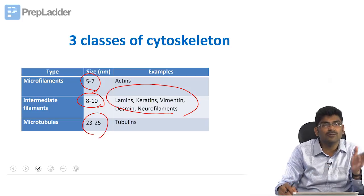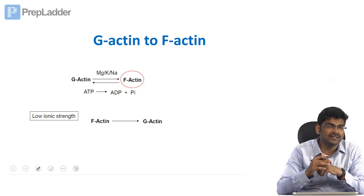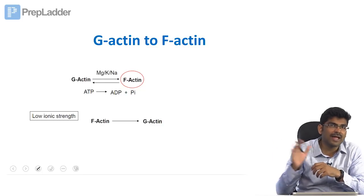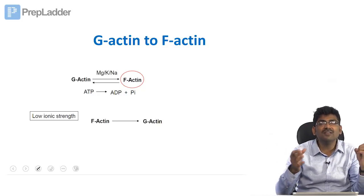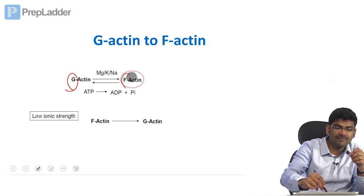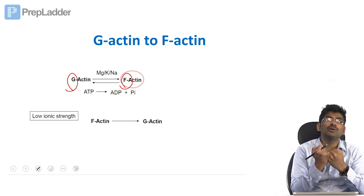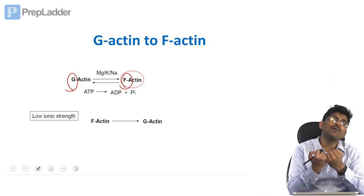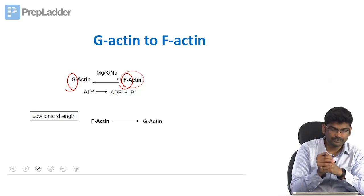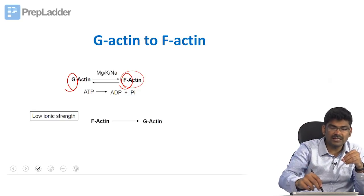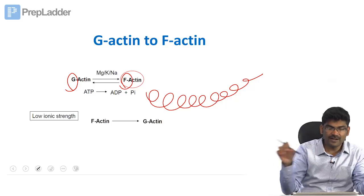Let us begin with microfilaments, that is actin. There are two types of actin: alpha and beta, and also gamma actin. Actin exists in two forms — globular (G-actin) and filamentous (F-actin). Globular actin polymerizes to produce filamentous actin. This polymerization requires magnesium and ATP. F-actin is what we see in images as beaded structures — filamentous actin.